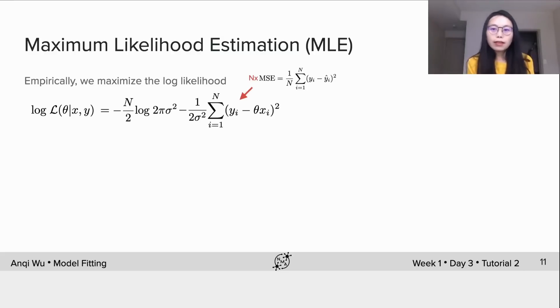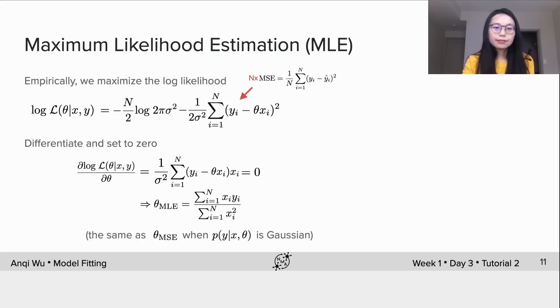We notice that this second term is actually the negative of n multiplying MSE. Therefore, by just staring at the log-likelihood function, we can foresee that maximizing the log-likelihood should give us the same solution as minimizing MSE. Again, we could differentiate this function and set the gradient to be zero. We arrive at the closed form solution for MLE, which is exactly the same as MSE's solution. But notice that this equality is only true when p(y|x, theta) is Gaussian.